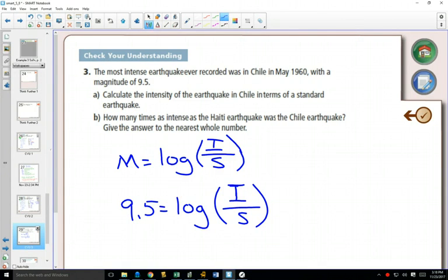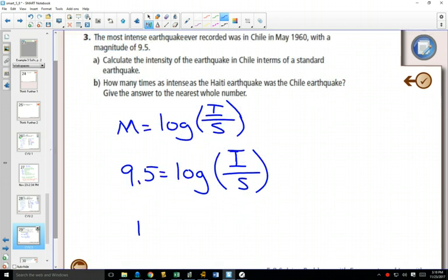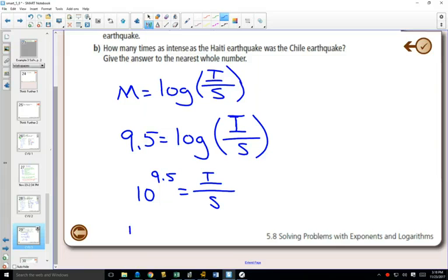Where is the capital I? It's inside a logarithm. How do we solve logarithmic equations? We already have a single log. Once you have a single logarithm, use the definition and change it to exponential form. What's the base? Ten. So 10^9.5 equals I/S. To solve for I, multiply both sides by S. So 10^9.5 times S equals I. The intensity of this earthquake was 10^9.5 times more intense than the standard earthquake.